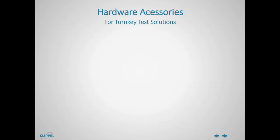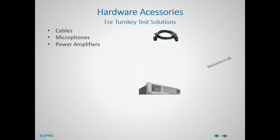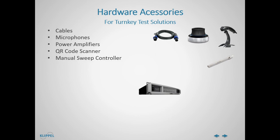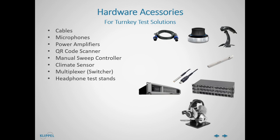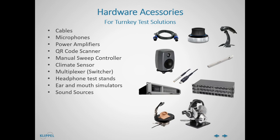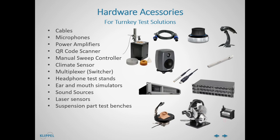There is an abundance of optional hardware accessories available to complement the typical QC hardware set, such as cables, microphones, power amplifiers, QR and barcode scanners, a manual sweep controller, climate sensors for monitoring temperature and humidity, signal multiplexers to switch the signal routing, headphone test stands in various forms and sizes, ear and mouth simulators, sound sources, laser sensors, suspension part test benches, GPIB interfaces, and Bluetooth interfaces.